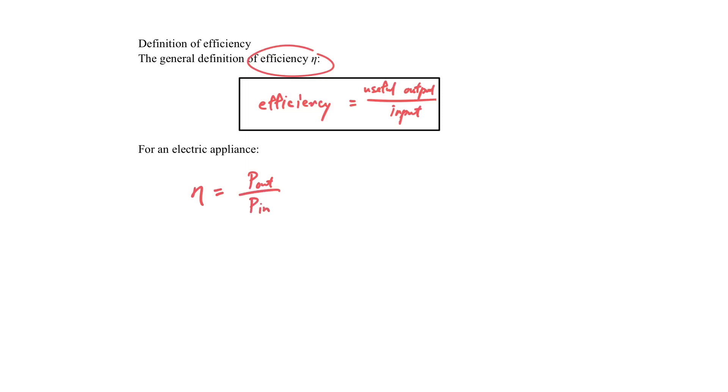And the efficiency we can write in this way: the power output over the power in. Now let's recall the idea, because the power in is actually the total power output. That means the useful power output plus the power loss. So this equation can also be rewritten in this way.